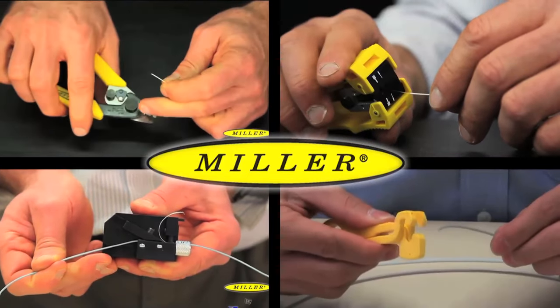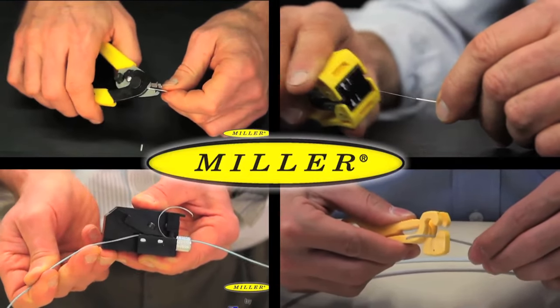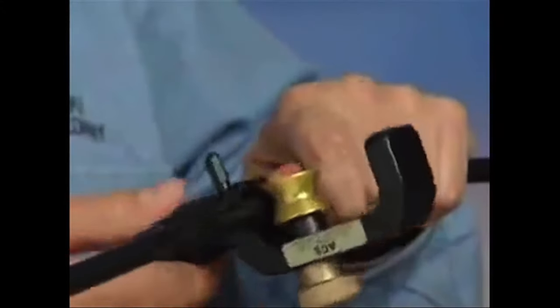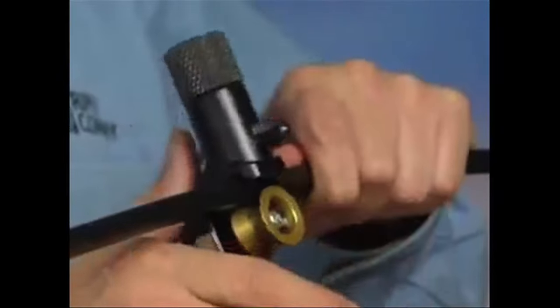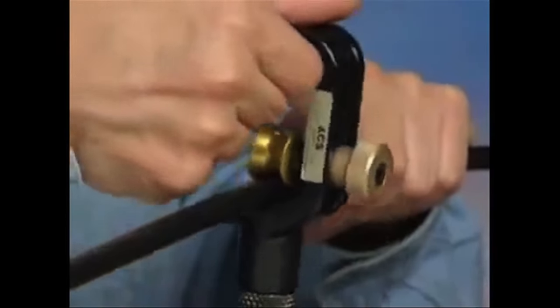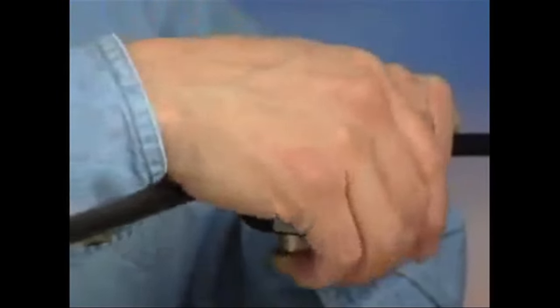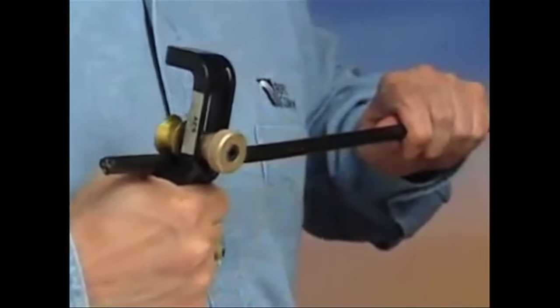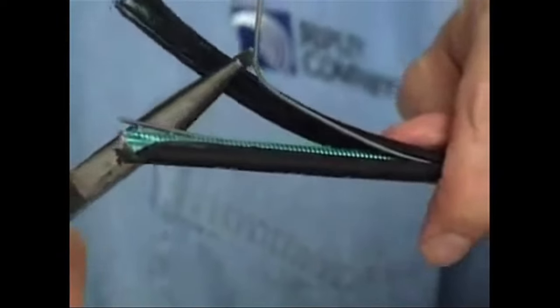Ripley's Miller brand includes fiber optic strippers that are lightweight and ergonomic. For working with armored cable, Ripley features the ACS armored cable slitter designed to slit the corrugated copper, steel, or aluminum armor layer on fiber feeder, central tube, and stranded loose tube fiber optic cables.